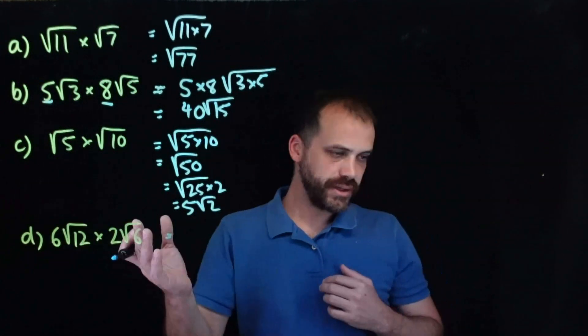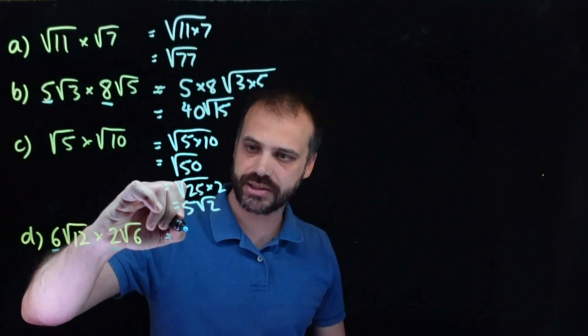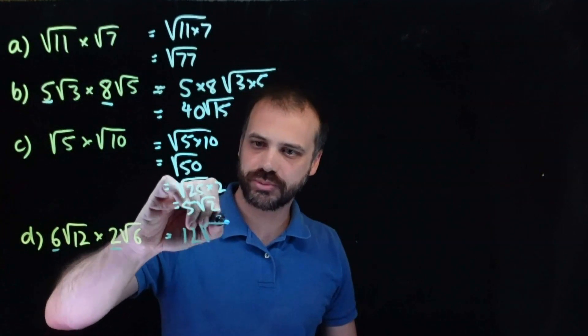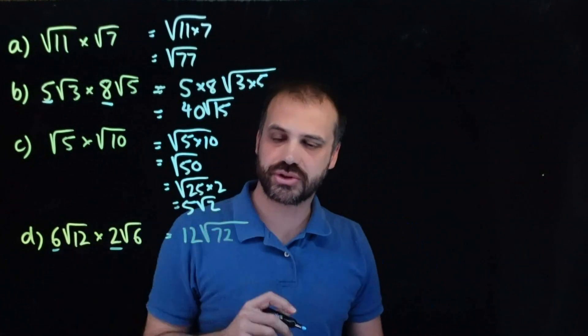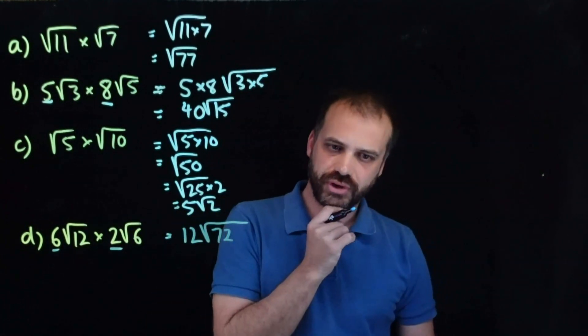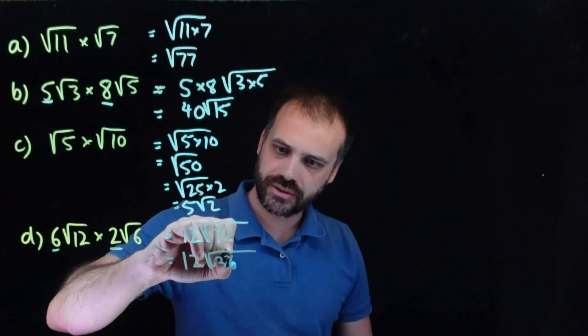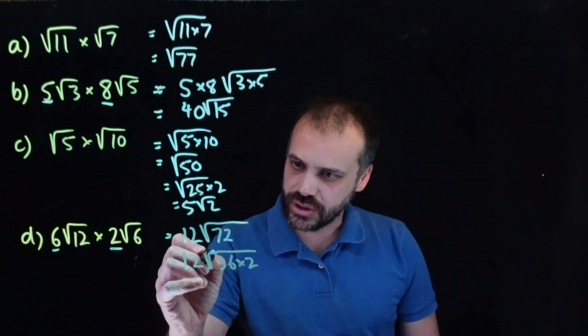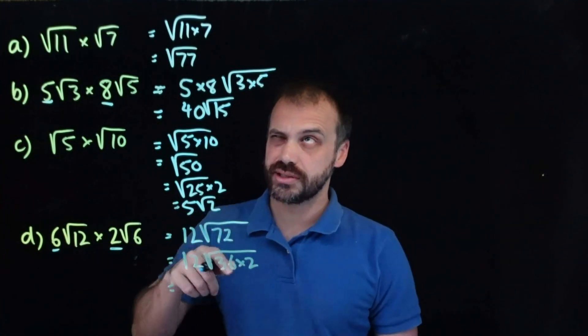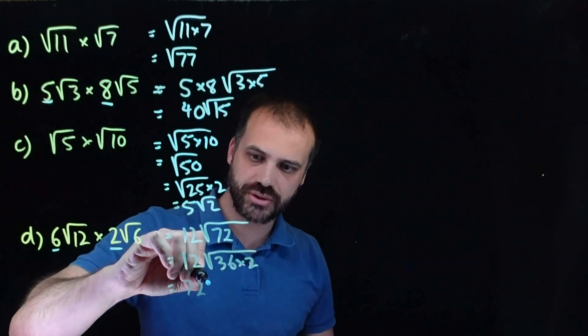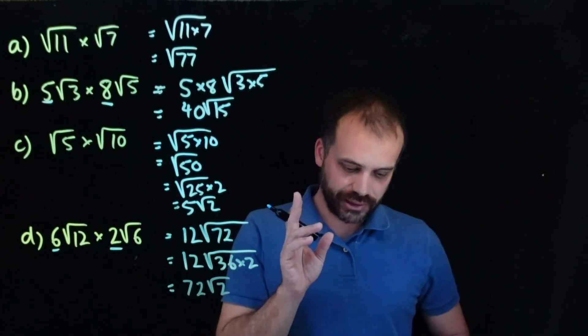Let's make some space. 6 root 12 times 2 root 6. Multiply the things on the outside together, 6 times 2 is 12, and multiply the things on the inside together. 12 times 6 is 72. Can we simplify 72? Yes, I believe we can. 36 times 2, so the 36 comes out as 6. 12 times 6 is 72, and we're left with root 2.